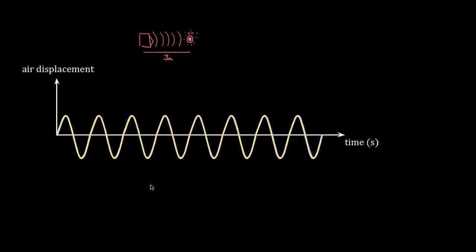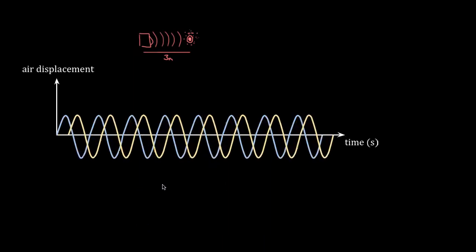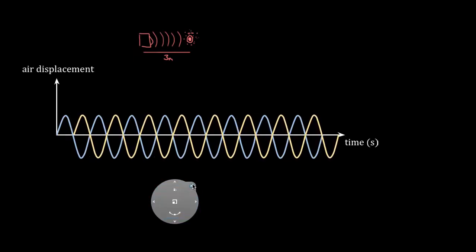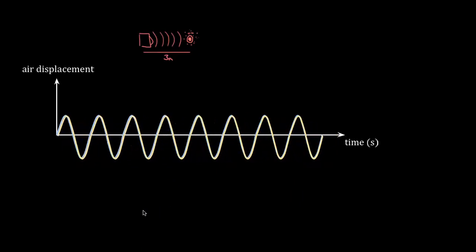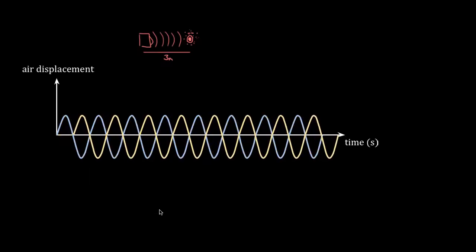And if I moved that speaker forward a little bit, or switched the leads — if I found some way to get it out of phase so that it was destructive interference — I'd hear a softer note. Maybe it would be silent if I did this perfectly. And it would stay silent or soft the whole time. So if you overlap two waves that have the same frequency, it's going to be constructive and stay constructive, or be destructive and stay destructive.